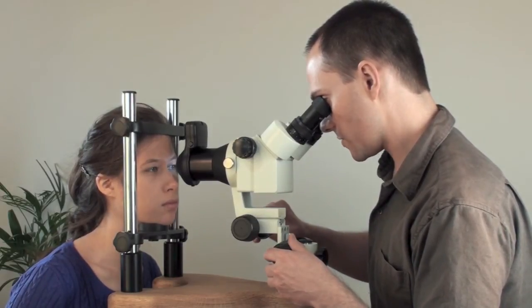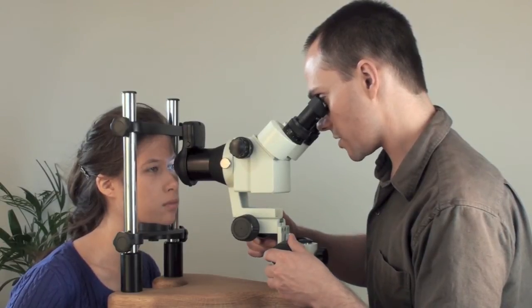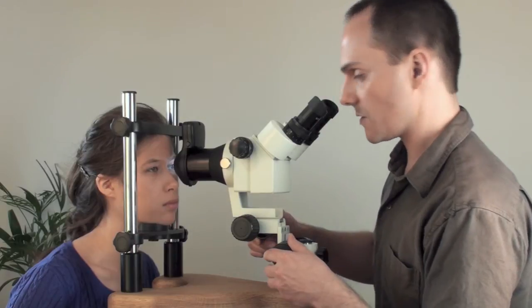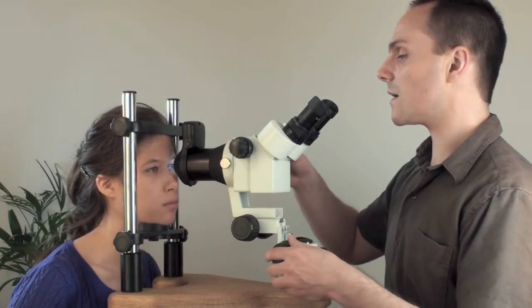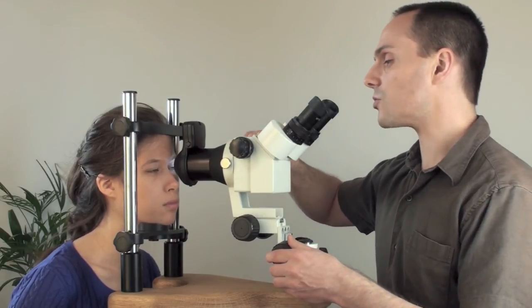And as we come closer by turning this wheel here, we can see the iris nice and sharp. Perfect. So we can also with this dial zoom right into the iris. It goes up to 45x magnification if you want to.